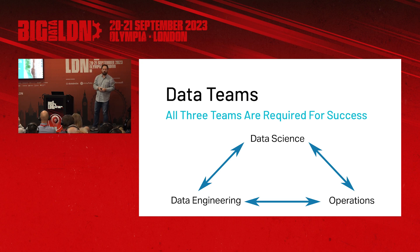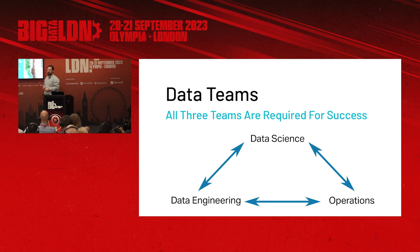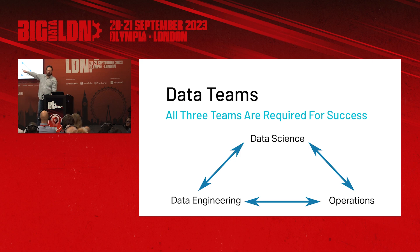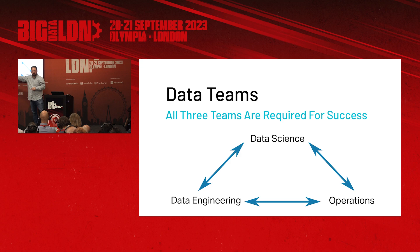If we don't have operations people, we put something together, put it in production, but nobody cares for it — that's a big problem. Sometimes when I'm talking to boards, to C-level people who say, 'Jesse, what is that one team that I need? I only have budget for one.' If you look at a diagram like this, it's showing you that one of those teams is not more important than the others. We need data engineering just as much as we need data science, just as much as we need operations.